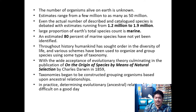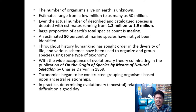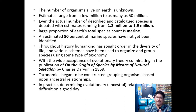With the wide acceptance of the first evolutionary theory, culminating in the publication of 'On the Origin of Species by Means of Natural Selection' by Charles Darwin in 1859, taxonomists began constructing groupings of organisms based on ancestral relationships rather than simple physical organization.